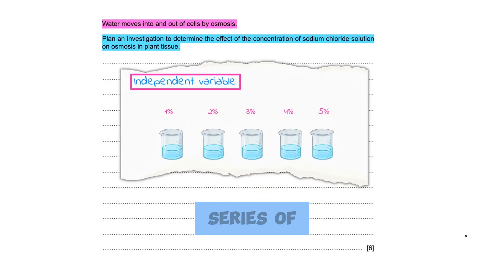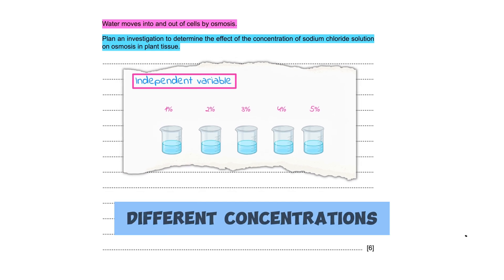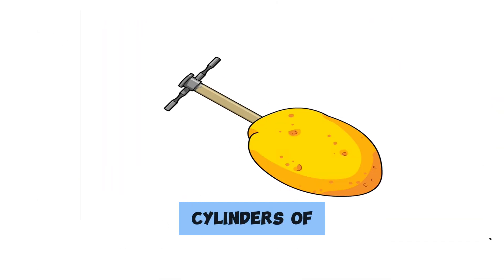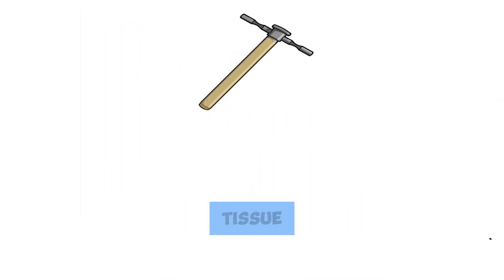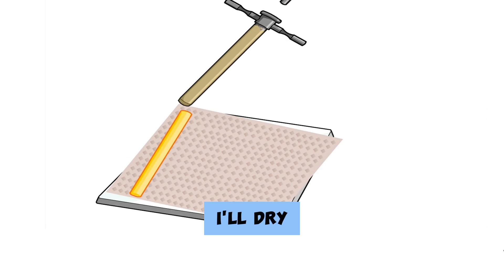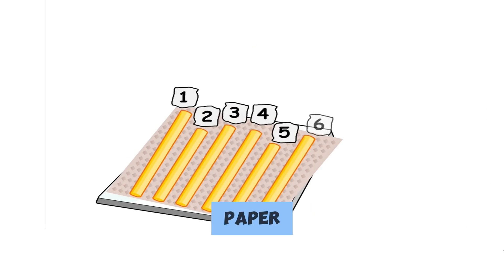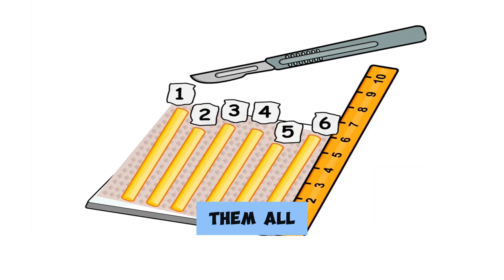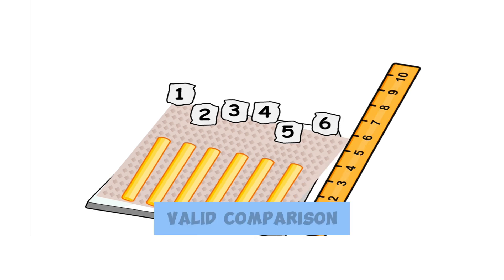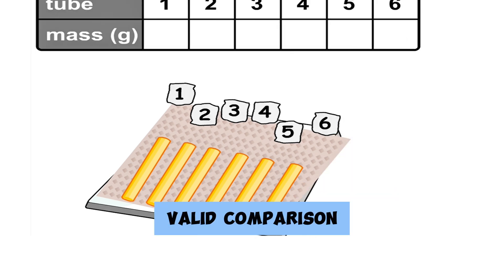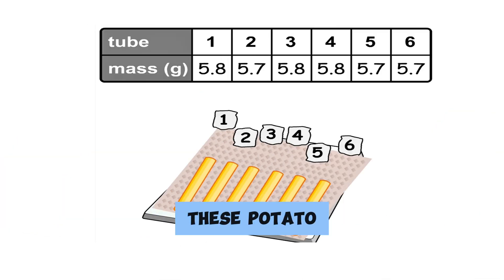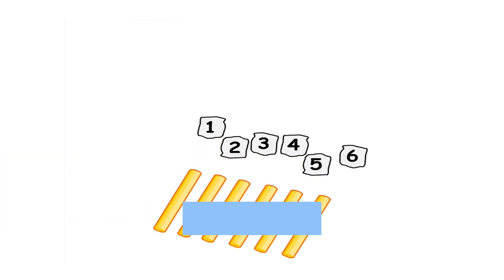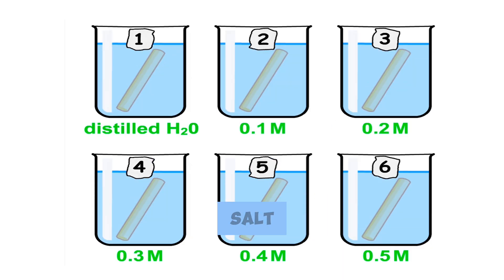I'm going to prepare a series of different concentrations of salt. Then I'm going to cut cylinders of potato, or any other plant tissue. I'll dry those potatoes on tissue paper, and I'll try my best to keep them all the same size so it'll be a valid comparison. I will then weigh these potato cylinders and soak them in different concentrations of salt.